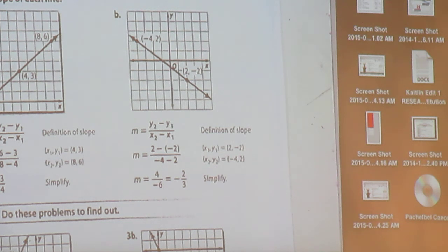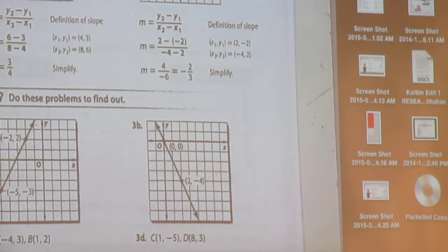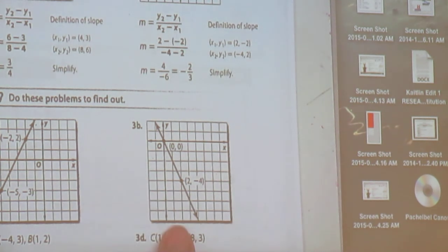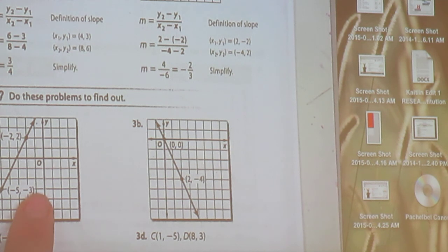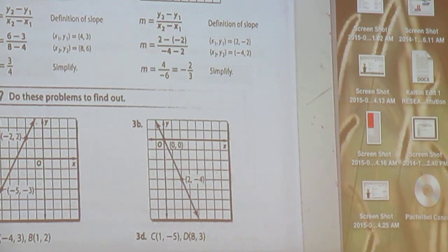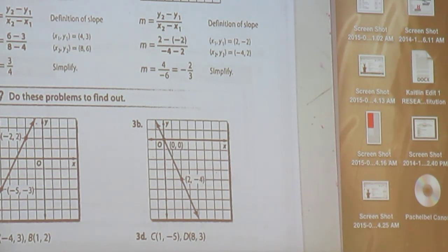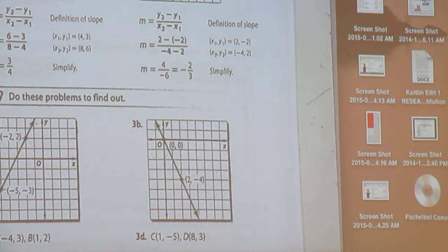So now we're going to put it all together. And you may work as a table. I want you to do 3A and 3B while talking to your neighbors. And using the formula, y2 minus y1 over x2 minus x1. And you can do this in the work section of your journal. I want you to do 3A and 3B. Stand up when you're done.